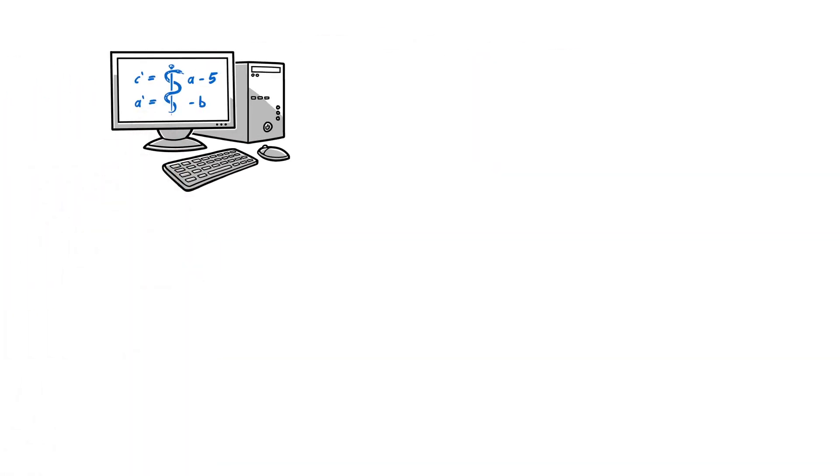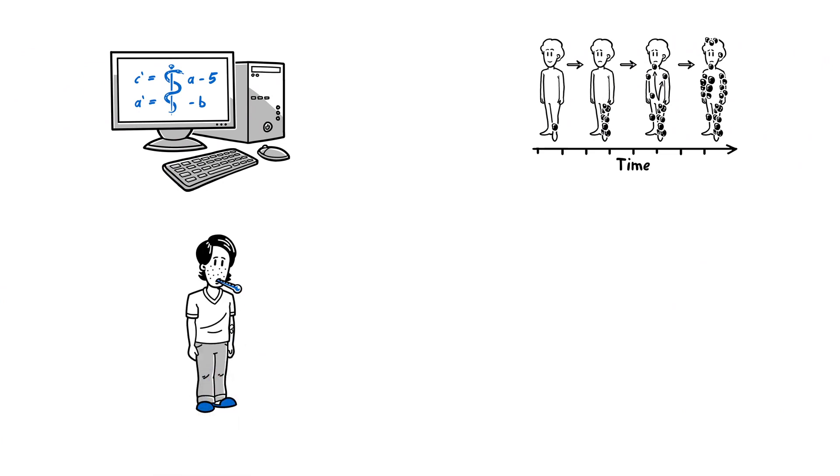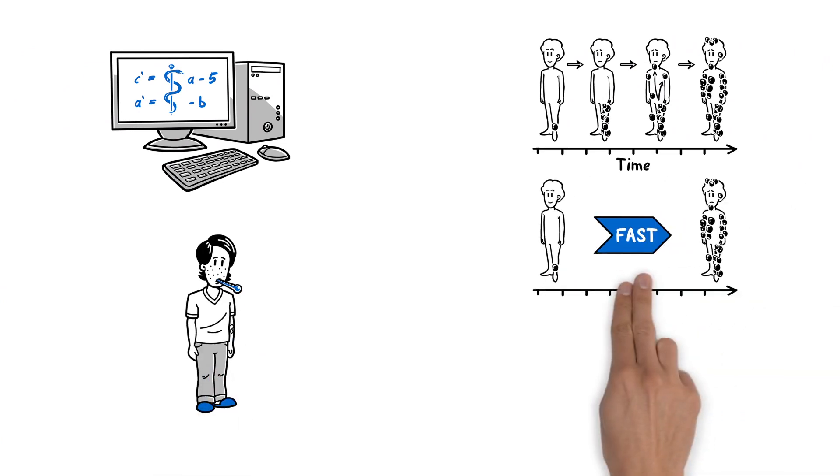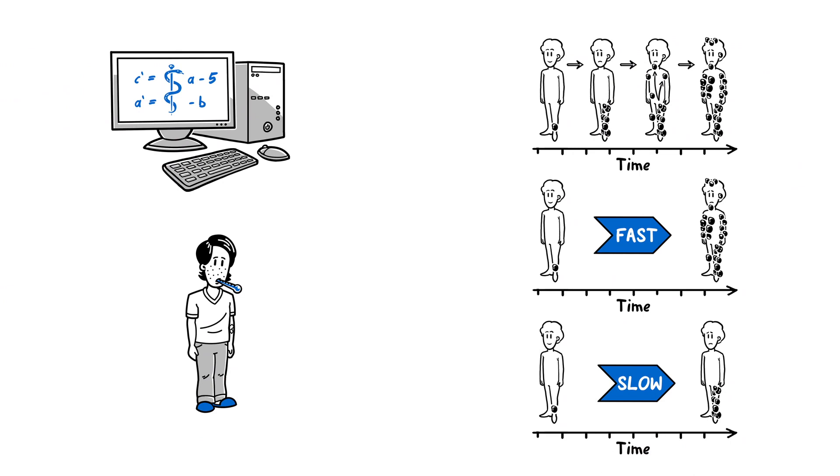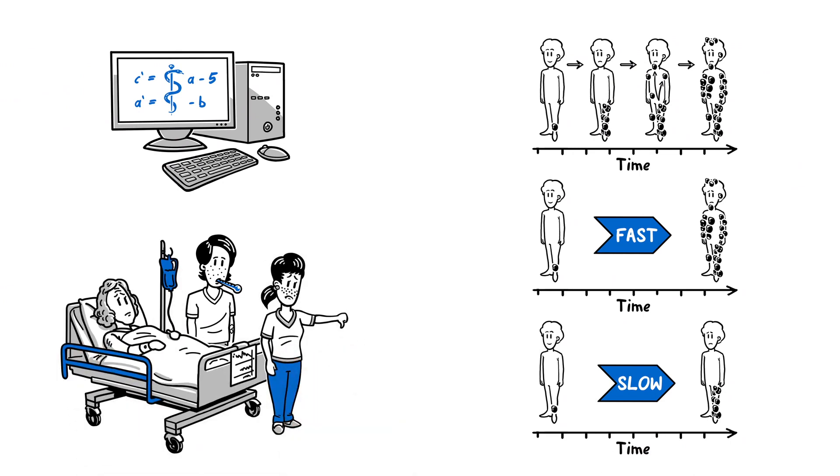By modelling the variability in disease progression, we can also identify patients whose disease will progress more quickly or slowly, and thereby enrich a study with the most appropriate population.